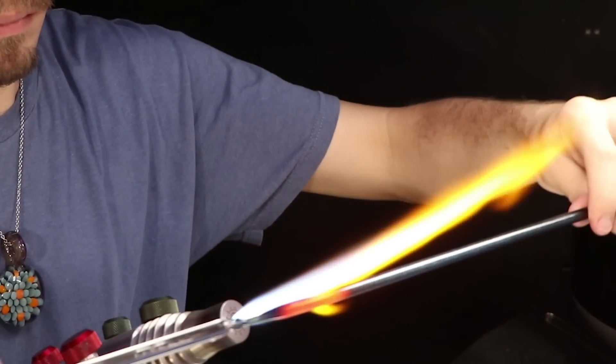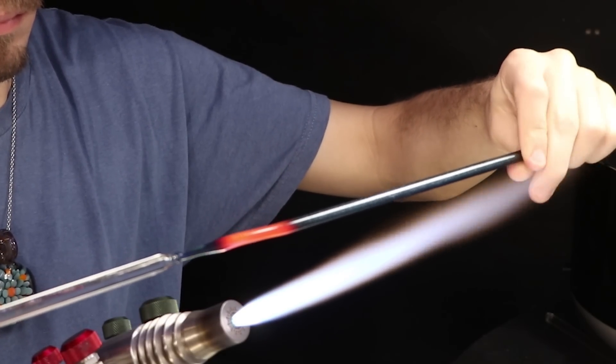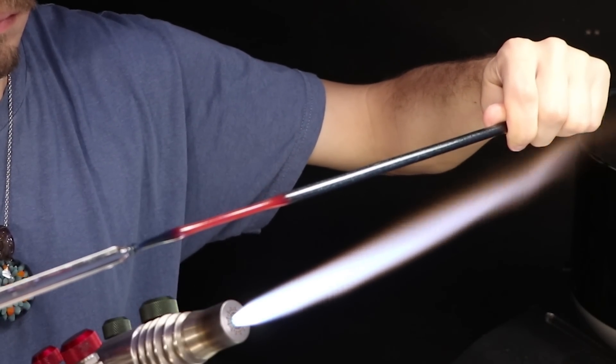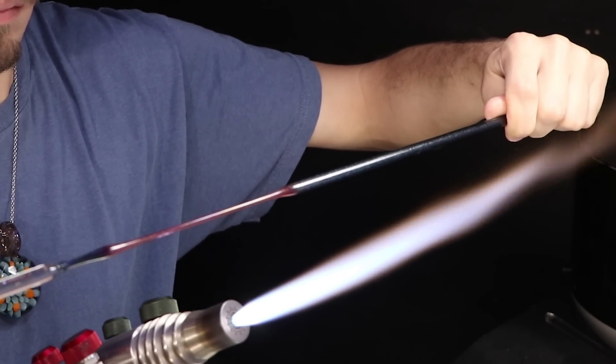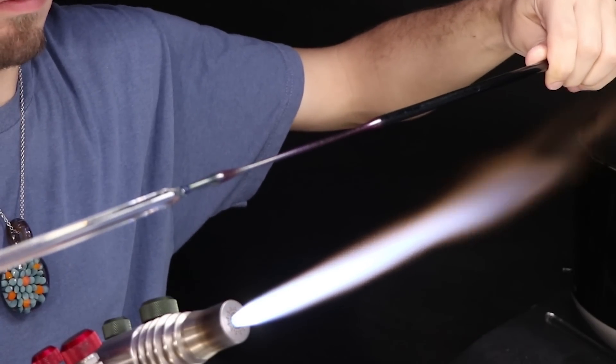For this one I'm gonna pull it a little bit slower. I'm gonna give the heat a little bit more time to radiate out. That should give me a little thicker of a stringer, probably twice the diameter at least of the last one.